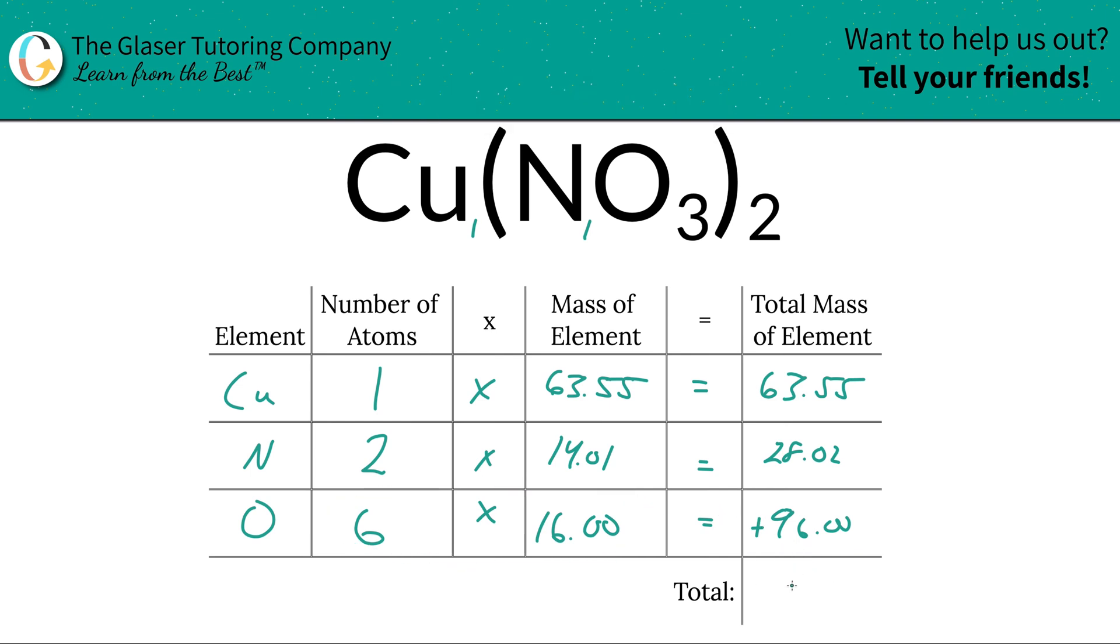Then to find the total mass of the compound, the total mass of the compound now is just going to be simply added together. So you're going to add this total column up. That'll find the total mass of the entire compound. So this is going to be 187.57. And there you have it, the total mass of the compound. This was the first step.